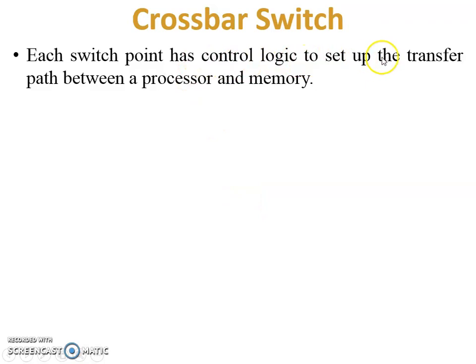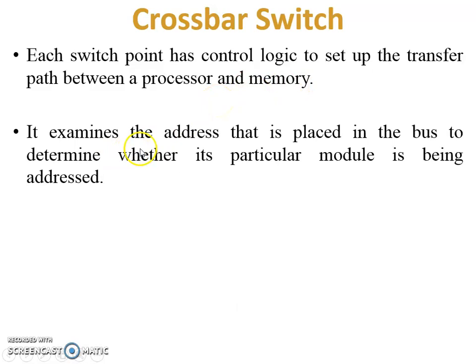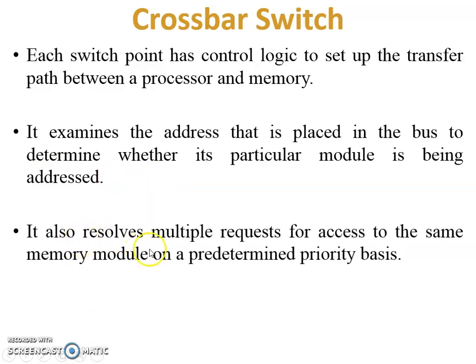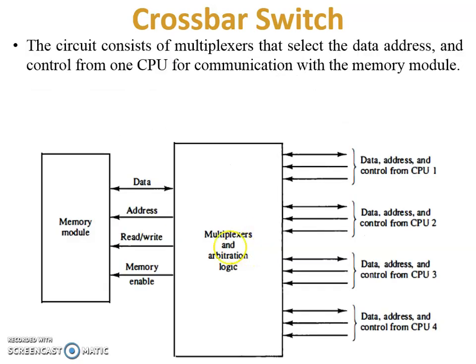Each switch point has control logic to set up the transfer path between a processor and memory. The cross point examines the address placed on the bus to determine whether its particular module is being addressed, and then routes it to the requested module. It also resolves multiple requests for access to the same memory module on a predetermined priority basis — if multiple CPUs request memory module 1 simultaneously, it is resolved based on the priority system.